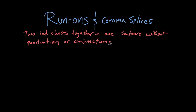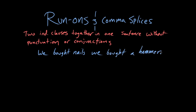So Rosie, what is a good example of a run-on sentence? We bought nails, we bought a hammer. We can see that this sentence contains two individual independent clauses: number one, we bought nails; number two, we bought a hammer. Right now as it stands, this is a run-on.